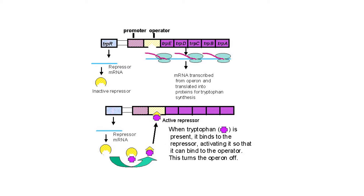Before we talk about the trp operon, let's review what an operon is. An operon is a segment of DNA that contains a regulatory gene that's transcribed and translated all the time to produce a repressor protein, and this regulatory gene controls transcription and translation of several structural genes.